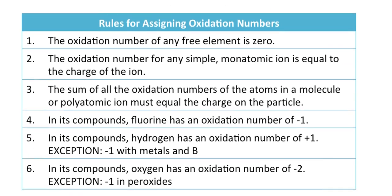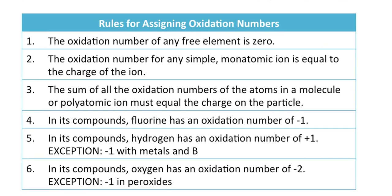The first rule for assigning oxidation numbers is that any atom in its elemental form — or any pure element compound — has an oxidation number of zero. For example, solid sodium metal has an oxidation number of zero. The same applies to hydrogen gas and neon, a monatomic noble gas. All of these are elements, and their atoms are assigned an oxidation number of zero.